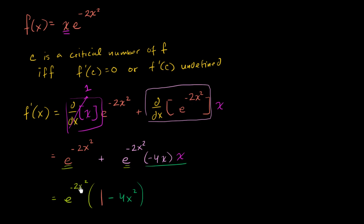Even if the exponent is a very negative number, you approach zero but never reach it. So e to the negative 2x squared can't be zero. Since the product of these two expressions equals zero, at least one of them must be zero. The only way f prime of x equals zero is when one minus 4x squared equals zero.